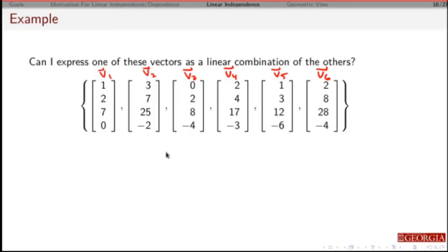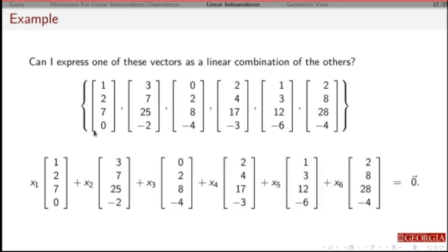So I'm just going to take a general linear combination. So there's my V1, my V2, V3, V4, V5, V6. And the question I'm going to ask is, can I find values for X1, X2, X3, X4, X5, X6, where they're not all zero?